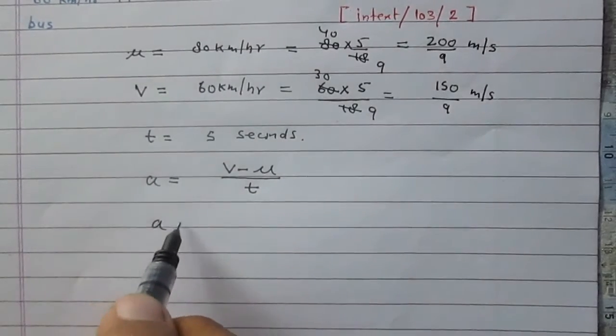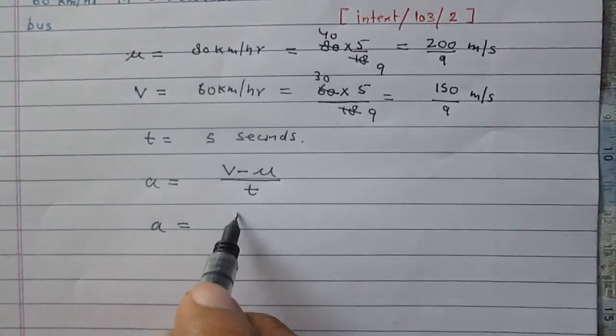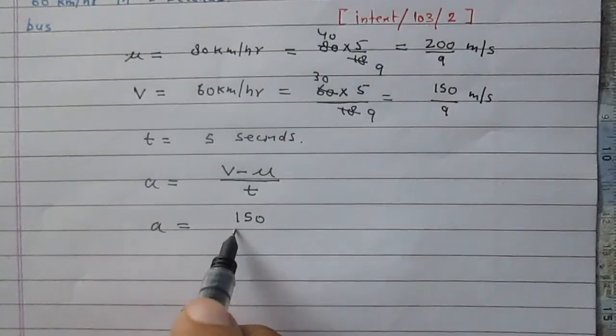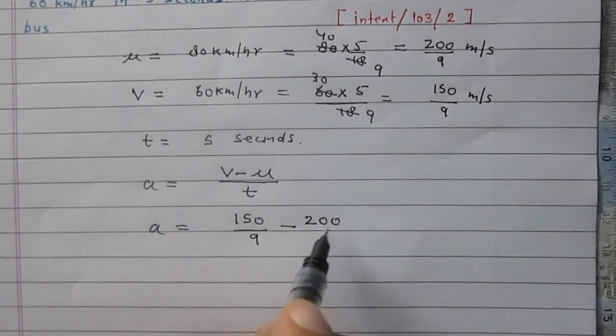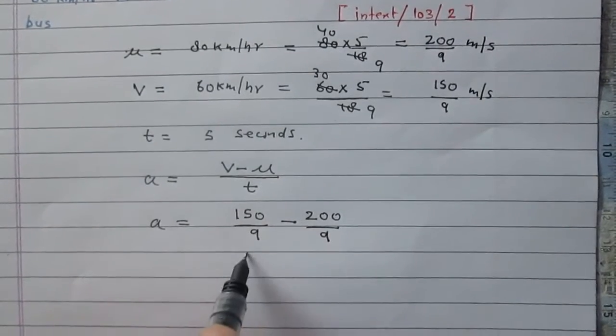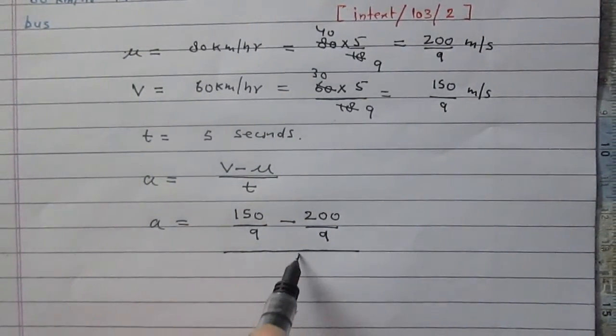Acceleration is V which is 150 upon 9 minus U which is 200 upon 9, whole divided by 5.